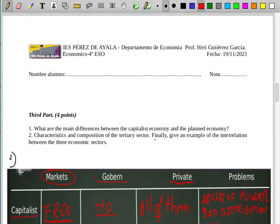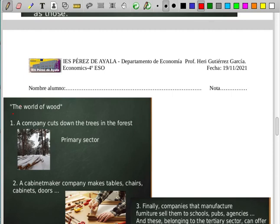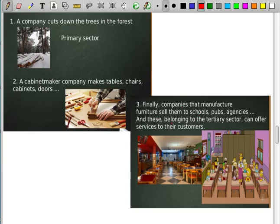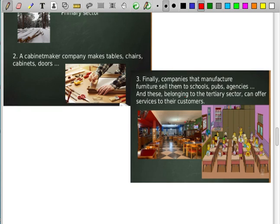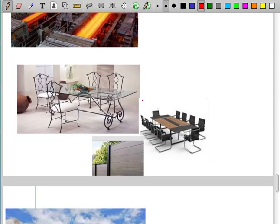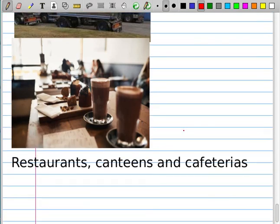Finally, give an example of interaction between three economic sectors. For example, in the world of goods, a company in the primary sector cuts wood. A company makes tables, chairs, cabinets, doors. And finally, companies to manufacturer sells to schools, pubs, agencies, and the tertiary sector can offer service to the customer. Other examples: iron mines, steel factories, and pubs or coffees. And finally, cattle farms, meat processors, and restaurants, canteens, and cafes.